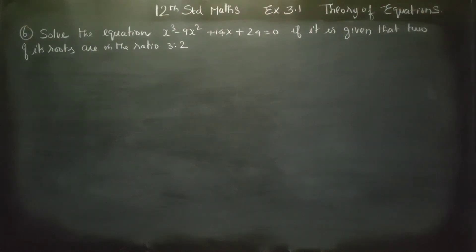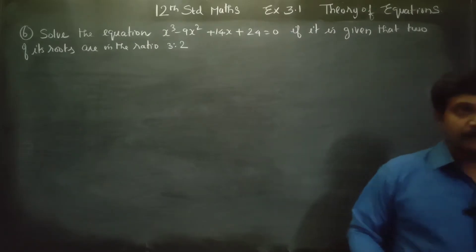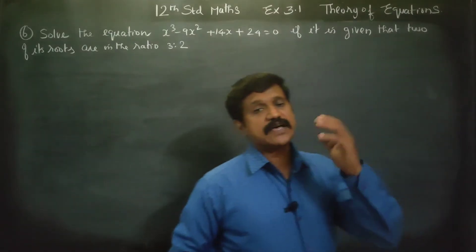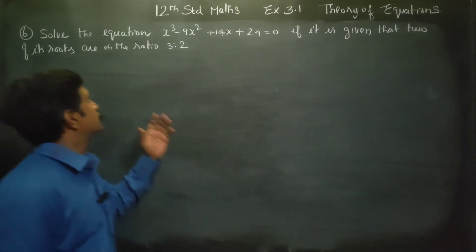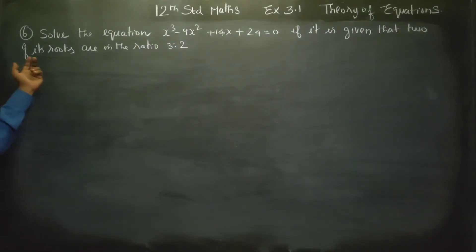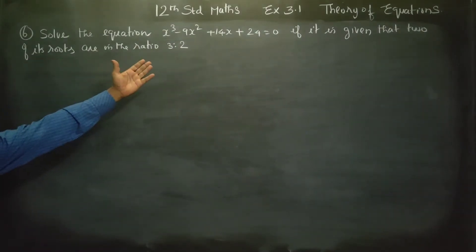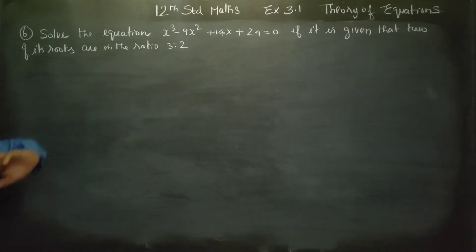Hello 12th standard students. Solve the equation x cube minus 9x square plus 14x plus 24 is equal to 0, where two of the roots are in the ratio 3 is to 2.